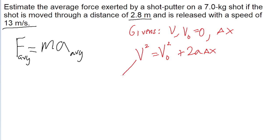So if we solve this equation for acceleration, then we'll have the average acceleration of the shot. We subtract v naught squared from both sides, so v squared minus v naught squared, and then divide both sides of the equation by two delta x, and this is a formula for the average acceleration.